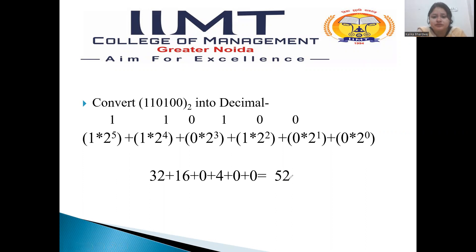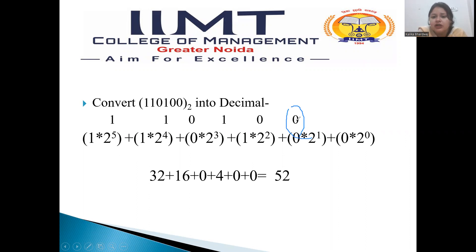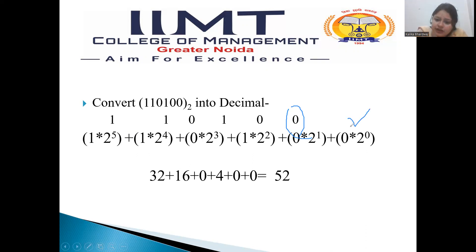I will show you how to convert the binary number 1, 1, 0, 1, 0, 0. We start from the right: 0 into 2's power 0 is 0; 0 into 2's power 1 is 0; 1 into 2's power 2 is 4; 0 into 2's power 3 is 0; 1 into 2's power 4 is 16; and 1 into 2's power 5 is 32.